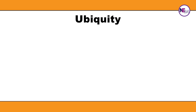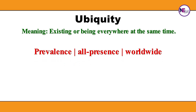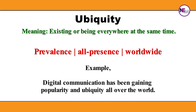Ubiquity. Existing or being everywhere at the same time. Synonyms: Prevalence, All presence, Worldwide. Example: Digital communication has been gaining popularity and ubiquity all over the world.